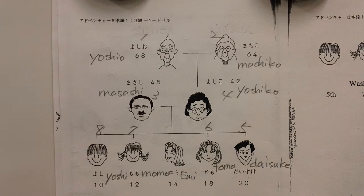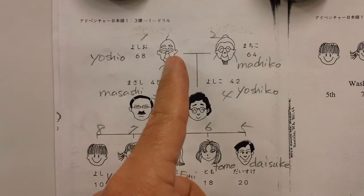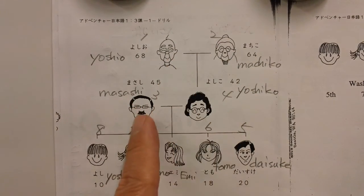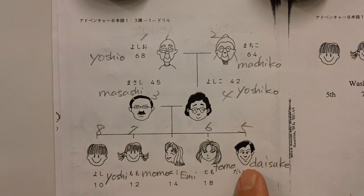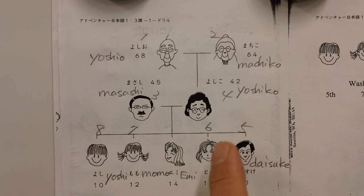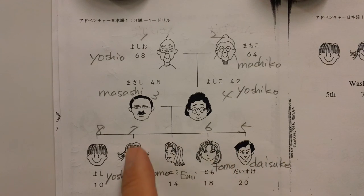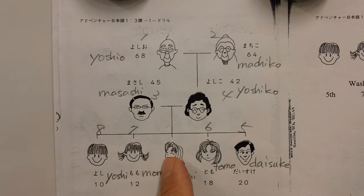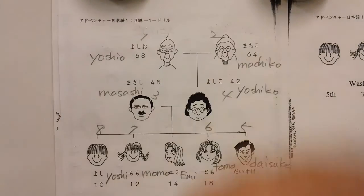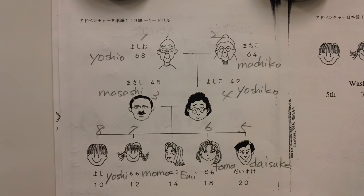Practice many times. At least: おじいさん、おばあさん、お父さん、お母さん、お兄さん、お姉さん、妹さん、弟さん — that's anata. Okay, practice many times.